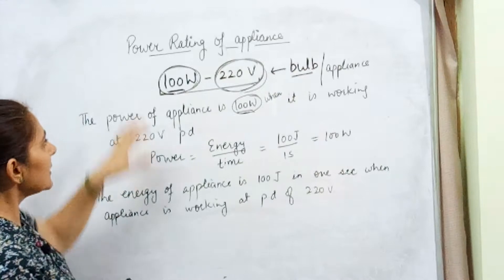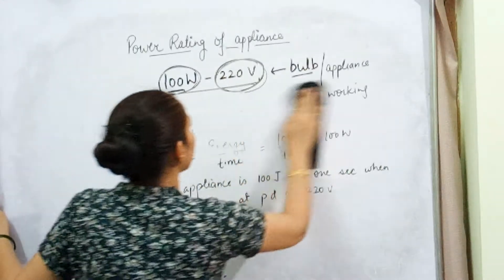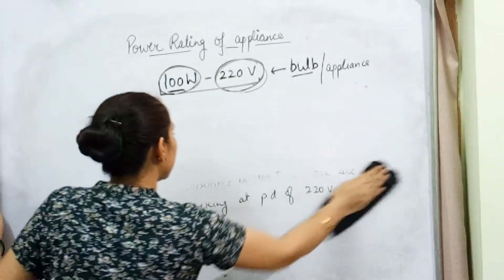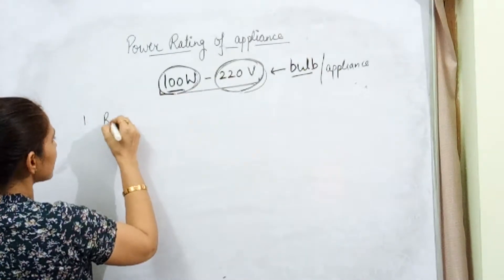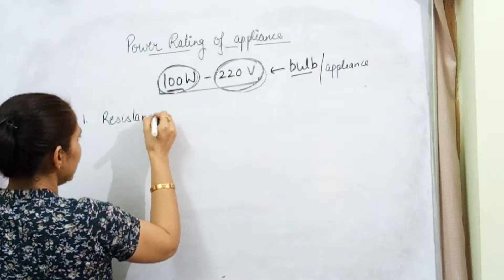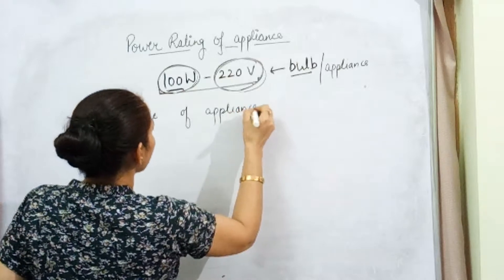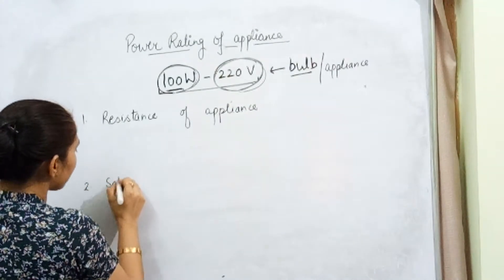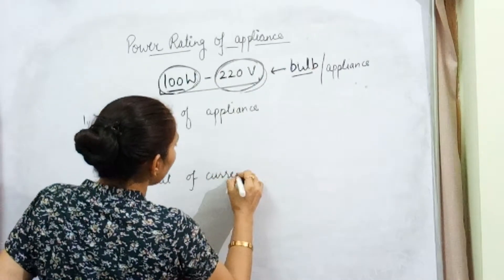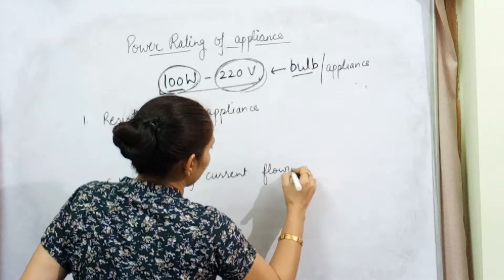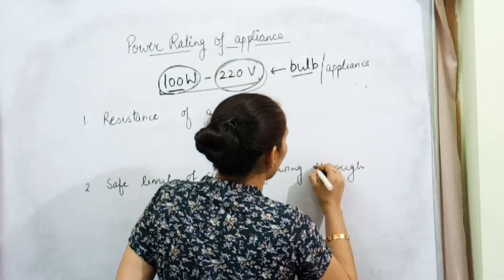The next question is: what else can we get with the help of this power rating? We can find out two more things. First, we can find out the resistance of the appliance. Second, this power rating helps us find out the safe limit of current flowing through the appliance. These are the two things which we can find out with the power rating given on the appliance.